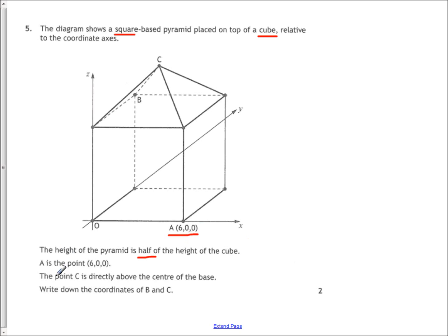Now, if you know point A is (6, 0, 0), that means that the distance from the origin to that point is 6. And because we know it's a cube, the length, the breadth, and the height are all 6. And because we know the height of the pyramid on top of the cube is half the height of the cube itself, the height must be 3. So using all of that, you can work out the coordinates of B and C. B would just be 0 along the x, 6 along the y, 6 up the z, so it's just (0, 6, 6).